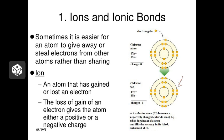When chlorine gains an electron, it will also get a charge. Since the electron has a negative charge and chlorine added it to itself, the entire atom will have a negative charge. We show this by listing the atomic symbol with a negative charge after it. A negative charge indicates that an atom has gained an electron; a 2− charge would indicate it has gained two electrons.